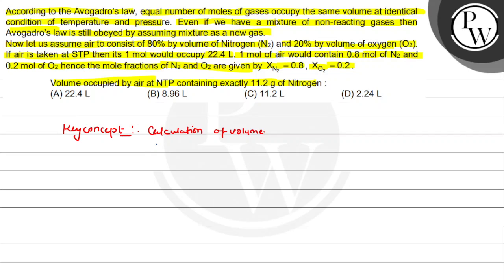Given we have 11.2 grams of N2. So moles of N2 equals 11.2 divided by 28, which equals 0.4. Volume of N2 is 22.4 multiplied by number of moles, which is 0.4. This gives us 8.96 liters.